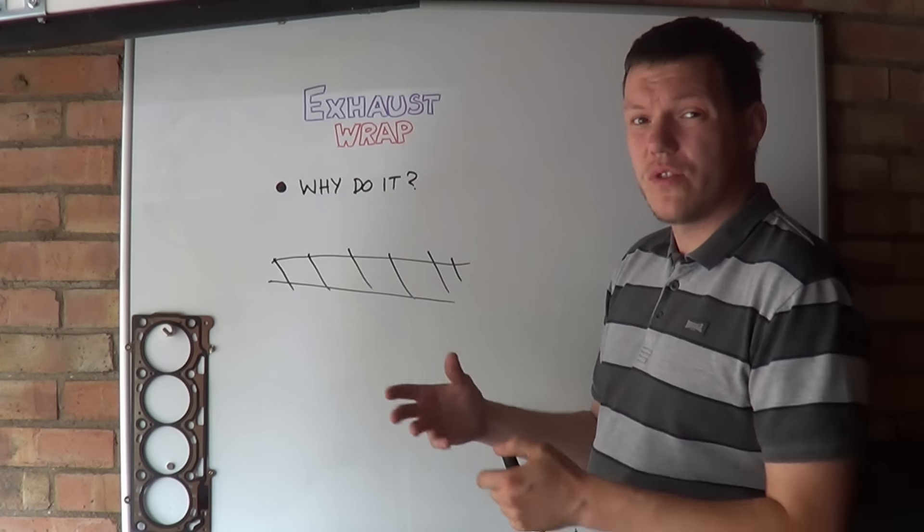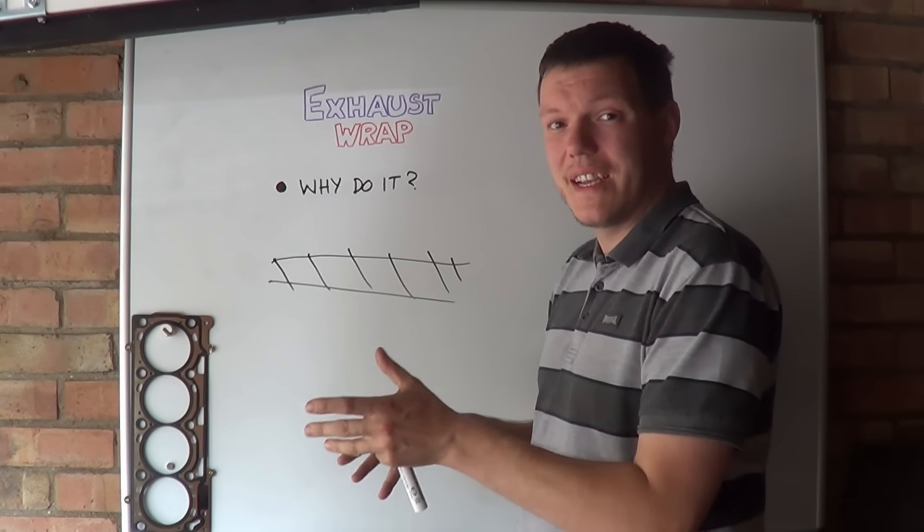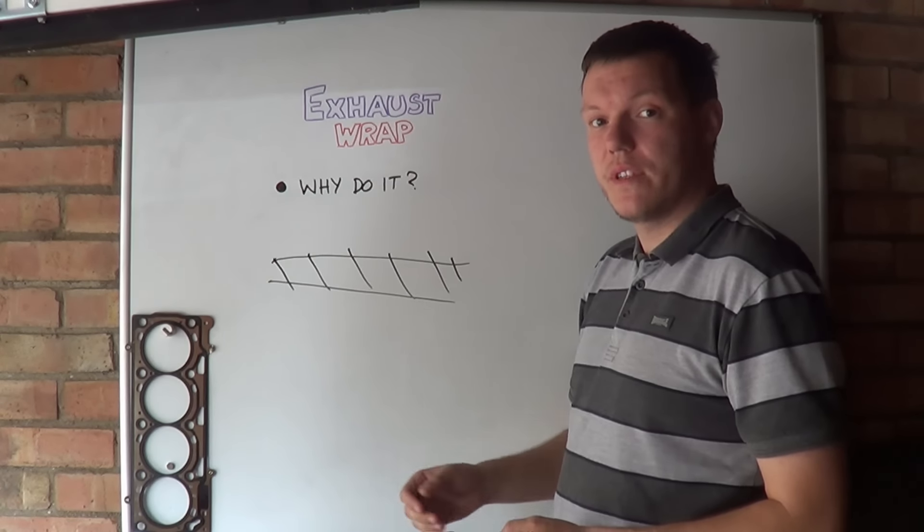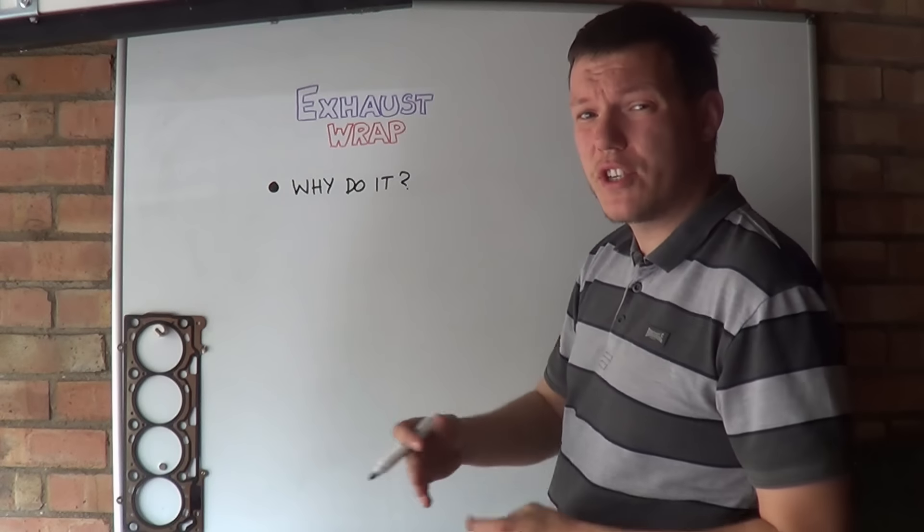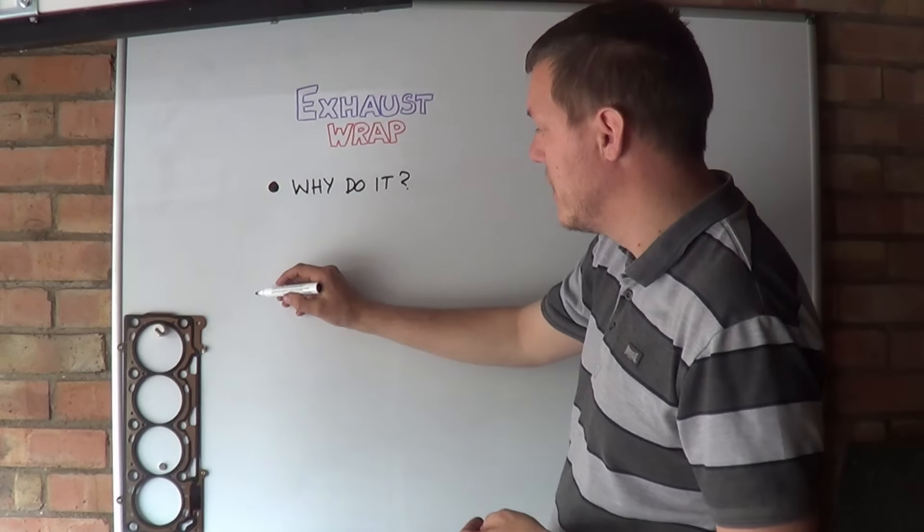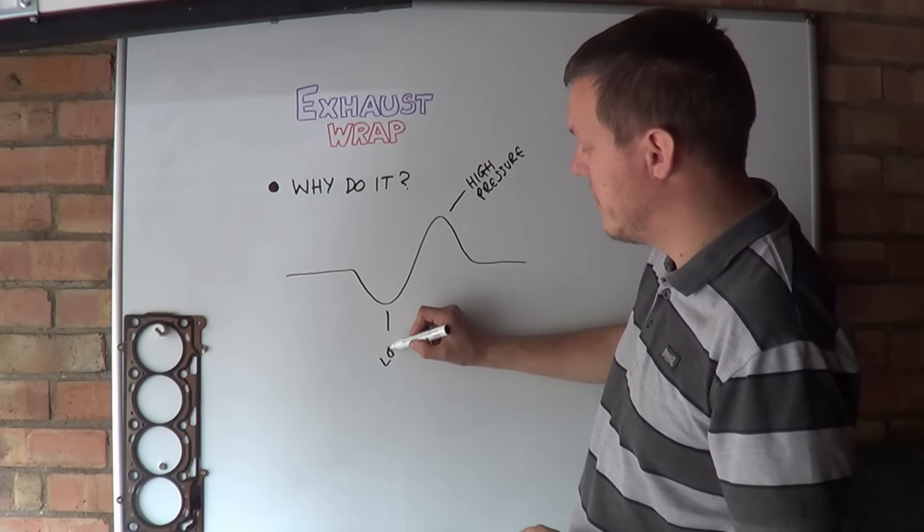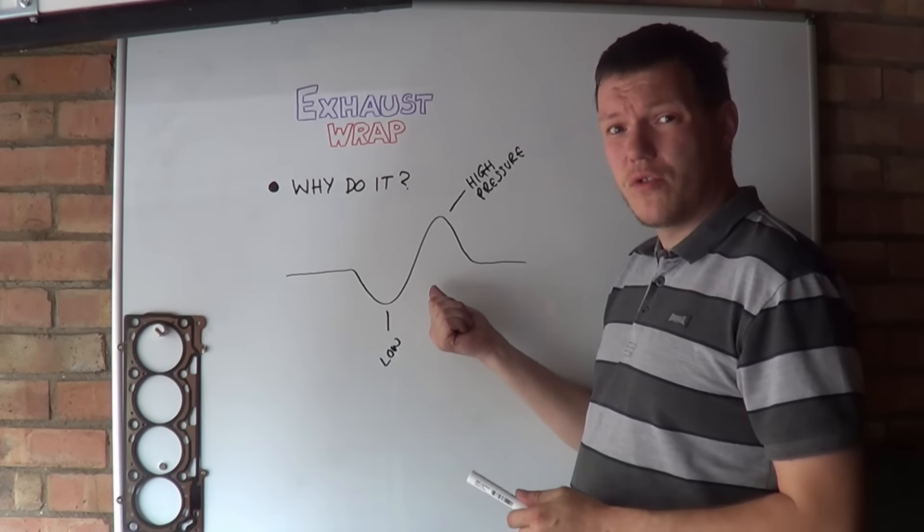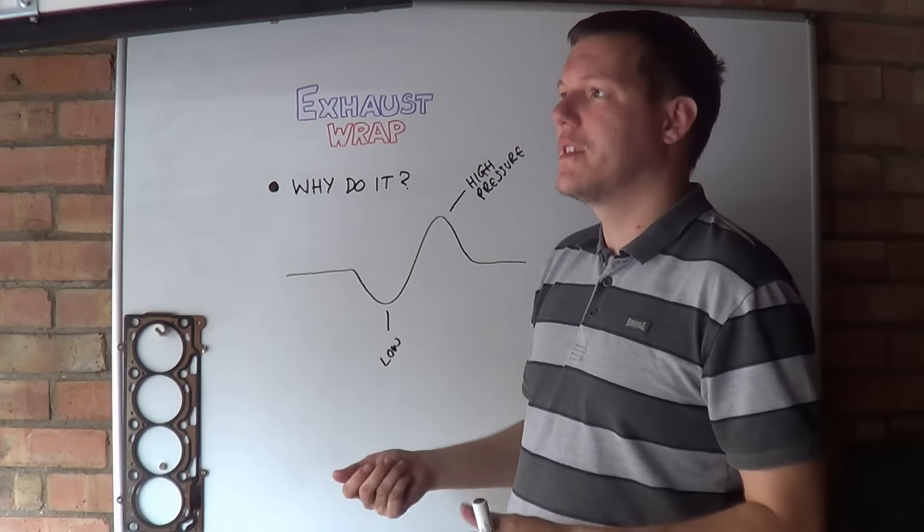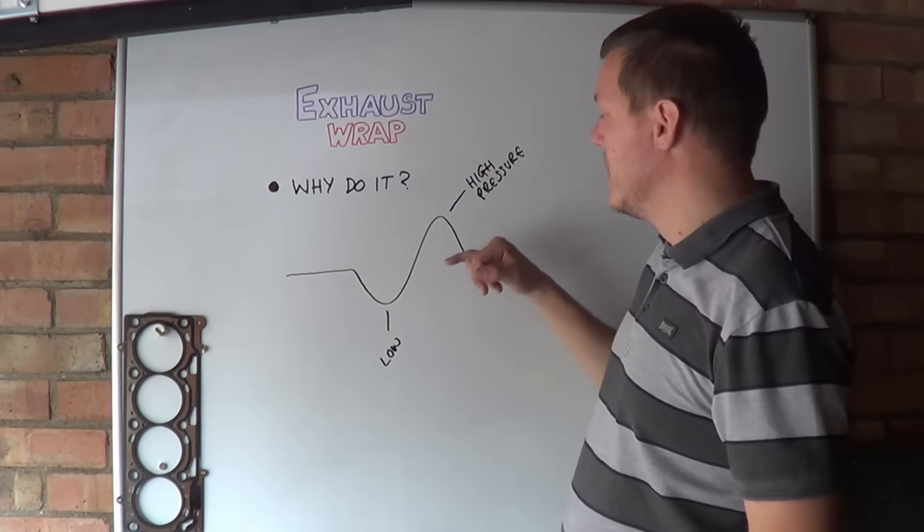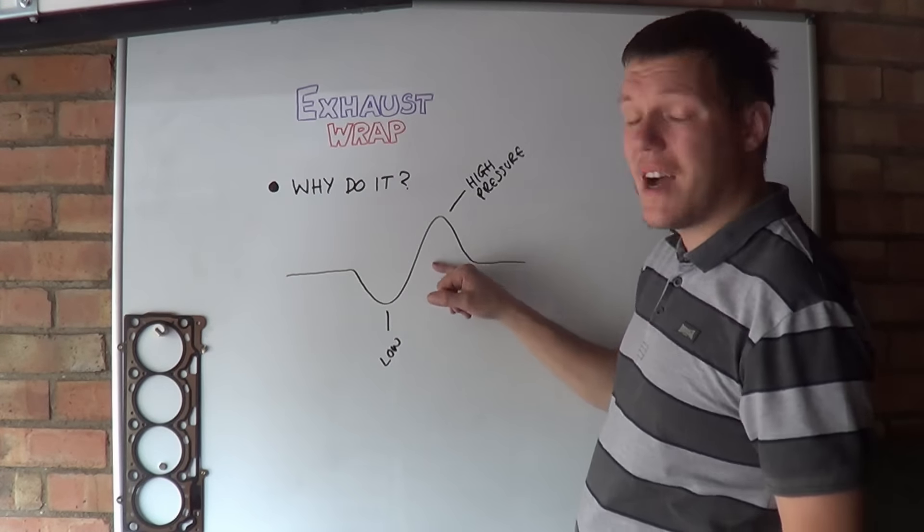The benefits of exhaust wrap is all to do with pressure waves. When the exhaust valve opens there's a pressure wave that progresses all the way down the exhaust pipe. So this is your high pressure and this is your low. The reason there's a low straight behind the high, the best way to think about it is like trying to shake a blanket. Every time you go like that there's always an up and a down movement. So you have a high pressure region and a vacuum region straight behind it.